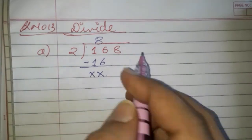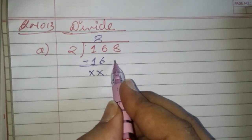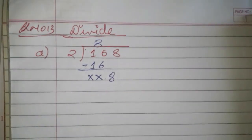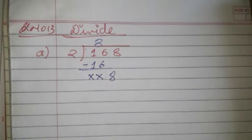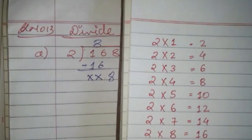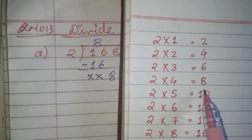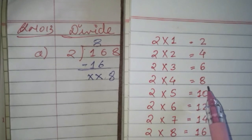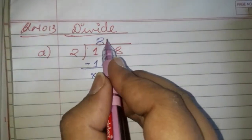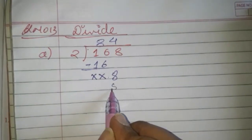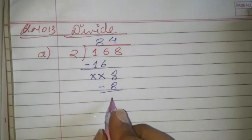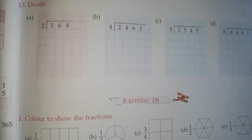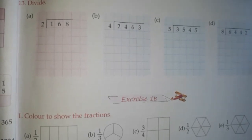The next number is 8. We carry down the 8. We check if 8 is in the table of 2 — yes, 8 comes 4 times, 2 fours are 8. So we write 4 here and subtract: 8 minus 8 is 0.